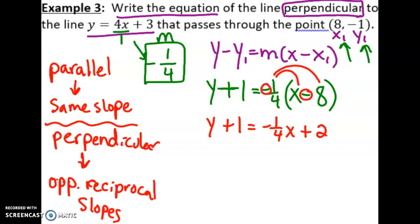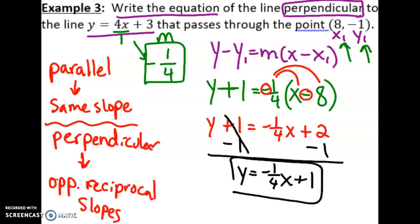The last and final step: y is almost isolated, but to get rid of the plus 1, we need to minus 1 on both sides. So our slope is still negative one-fourth, and then 2 minus 1 is a positive 1.